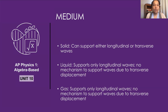Let's take a look at what types of waves travel in what types of mediums. Solids can support either longitudinal or transverse waves. In a solid material, you can have slight compression of the atomic lattice to support longitudinal modes. You can also have displacements along the surface to support transverse modes.